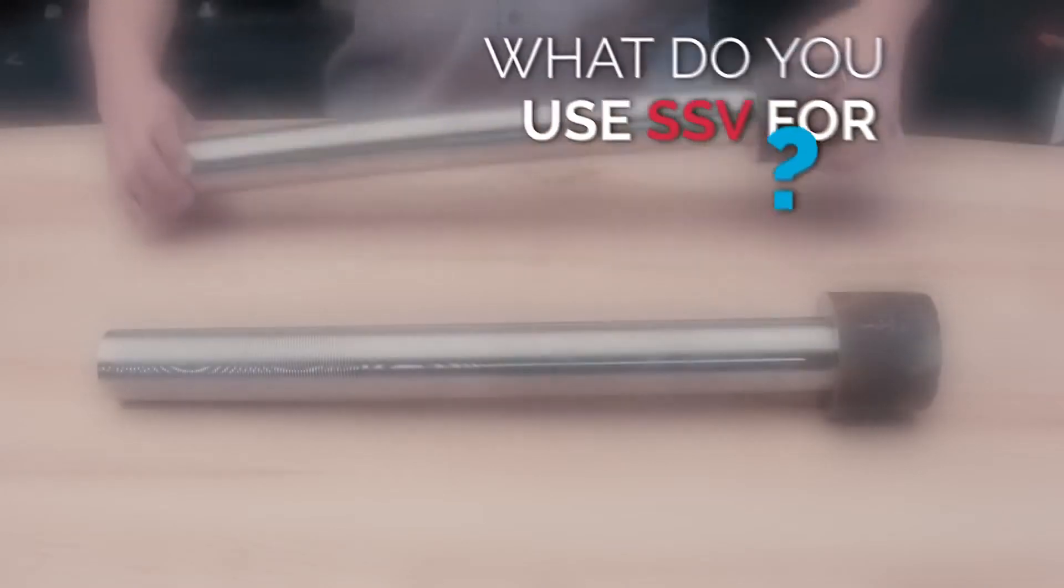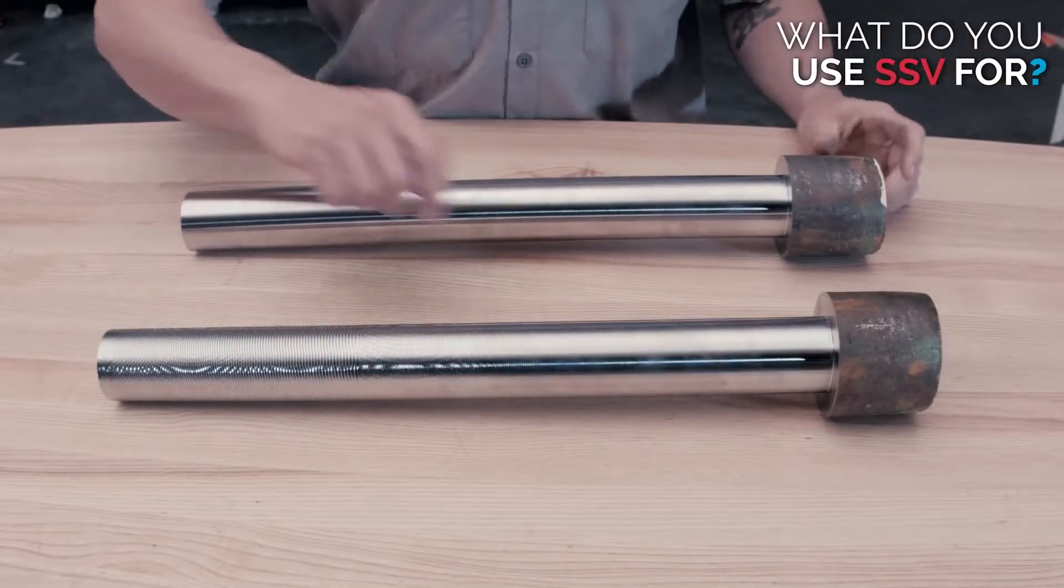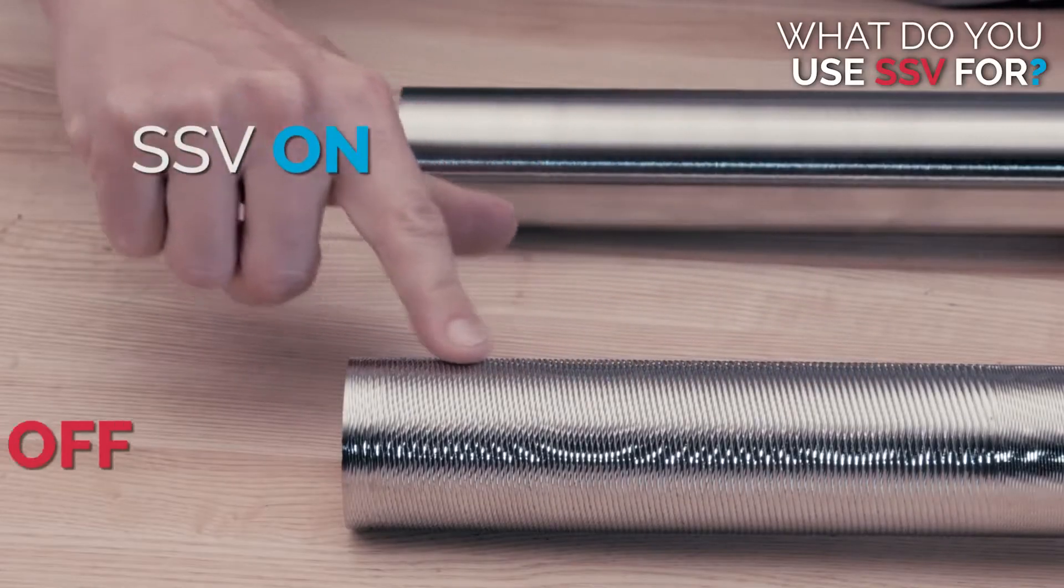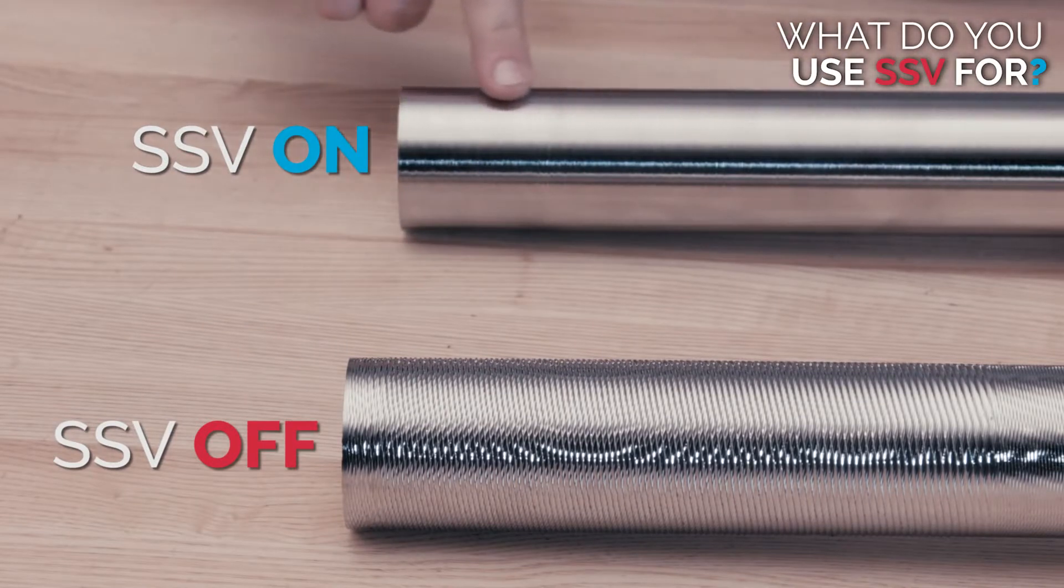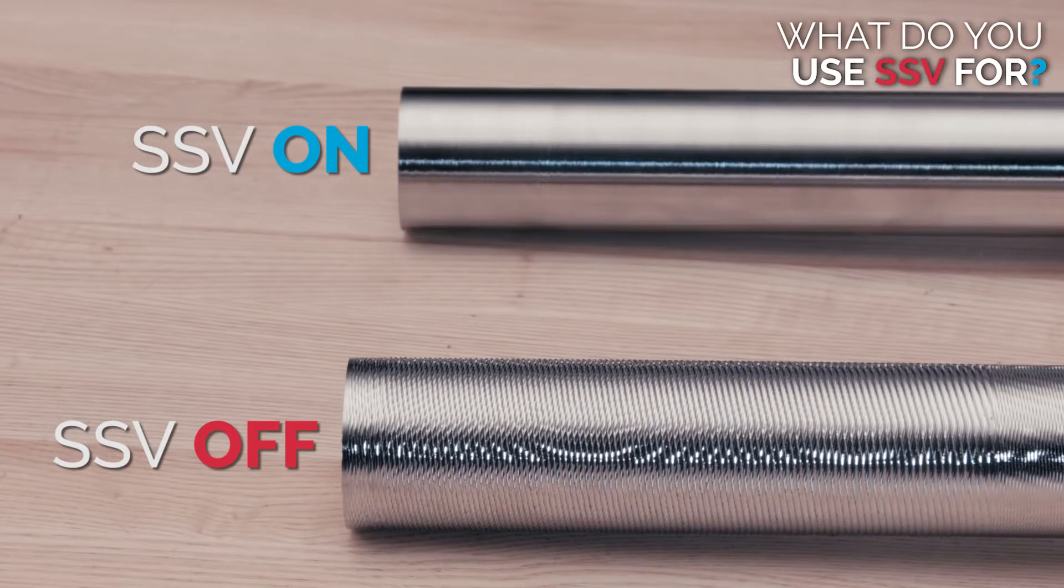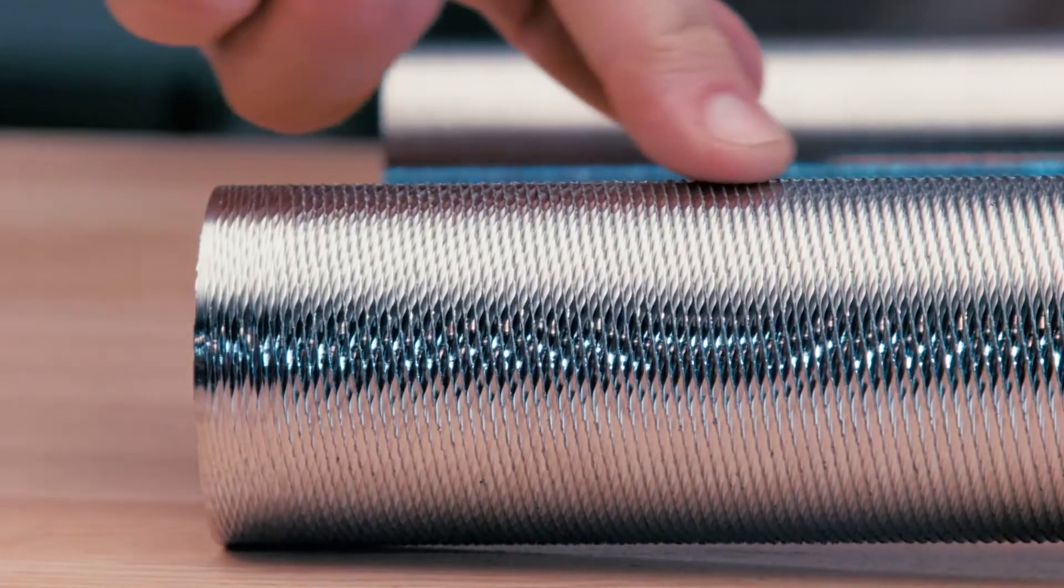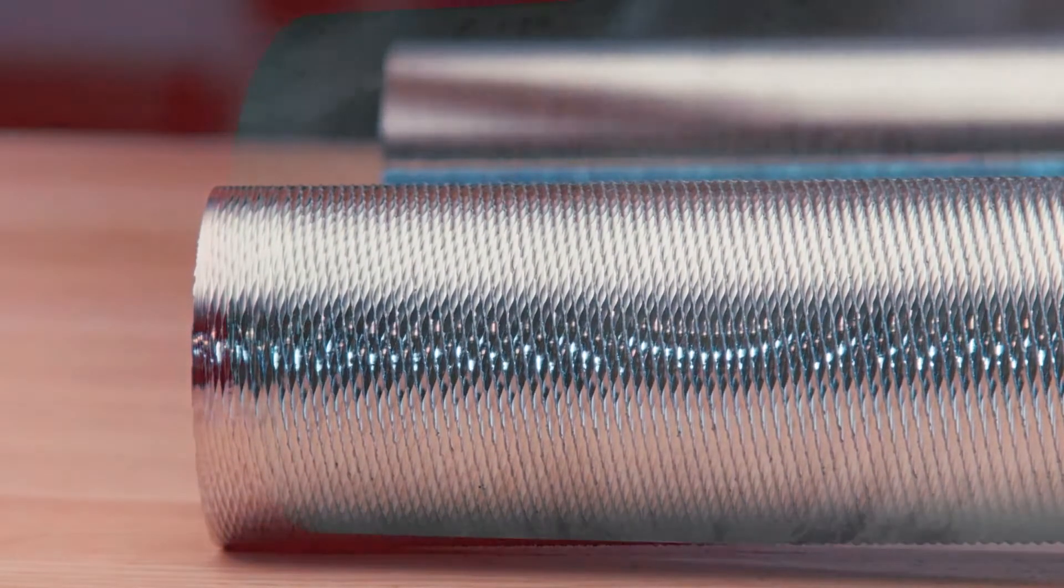Well, when difficult cutting conditions cause chatter in your workpiece, SSV can help. We all know chatter is bad, but what is chatter? Describing how chatter starts and progresses during turning can get really complex.